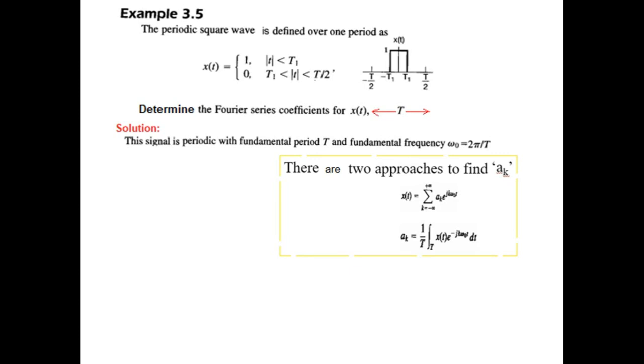There are two approaches to find aₖ: one is to write it as a summation and take the coefficient aₖ, and the other is the integral form. The last two problems followed the summation technique, but here it is not easy to use that formula, so we will use the integration method to find aₖ.